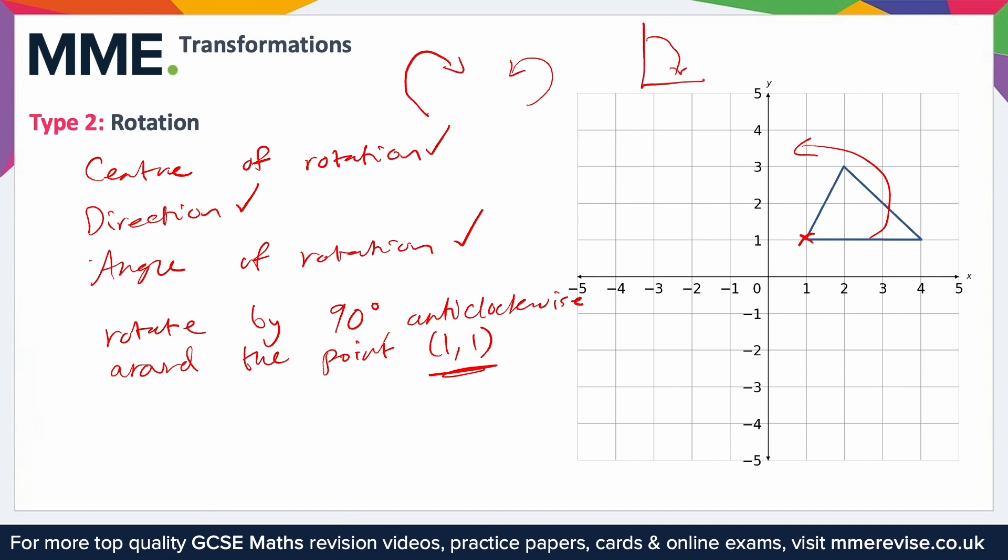What you're going to do is you're going to stick some tracing paper on top. Draw your little center of rotation. Draw around your shape. And then hold either your finger on the point where our center of rotation is or your pencil. And then slide the tracing paper so that the shape moves like that. And then we end up here and we can trace our shape back on so that we know where it ends up.